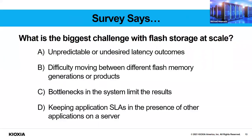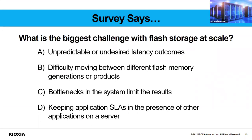We're going to launch a survey right now — it will show up in the Zoom survey tool. The survey question is: what is the biggest challenge with flash storage at scale? A — unpredictable or undesired latency outcomes. B — difficulty moving between different flash memory generations or products. C — bottlenecks in the system that limit results or performance. D — keeping application SLAs in the presence of other applications on a server, basically multi-tenant. We'll put these answers on the PDF of the slide set when we send it out on Thursday.